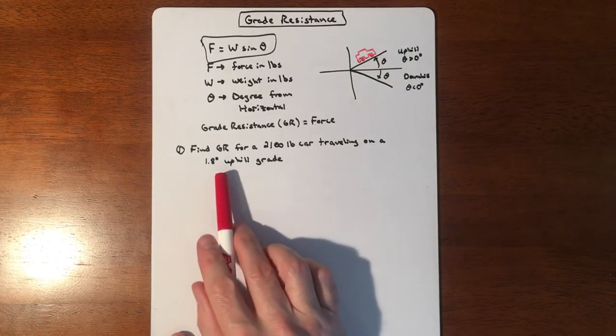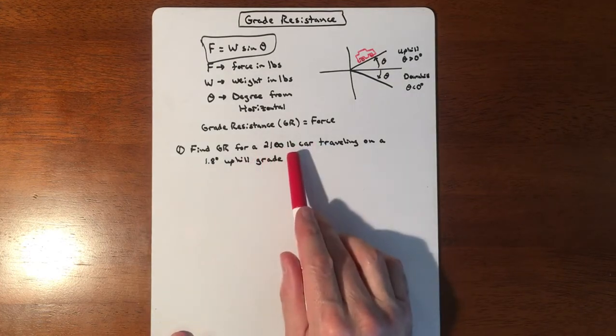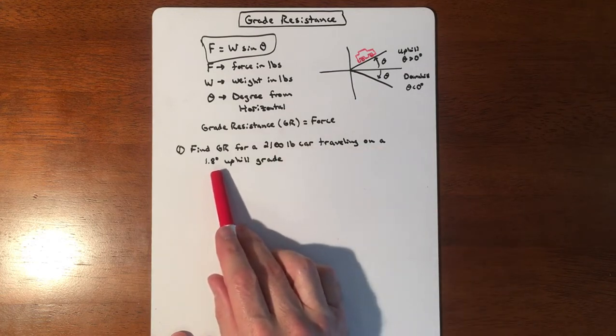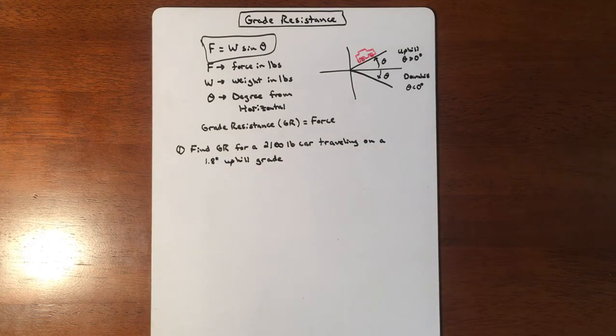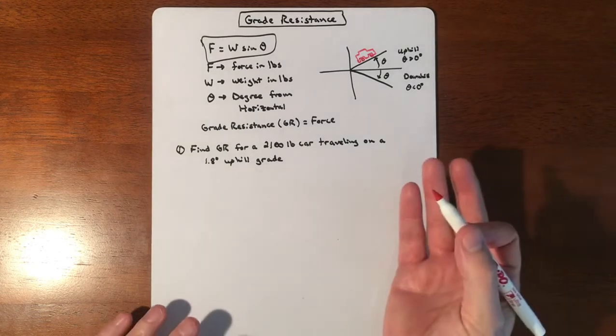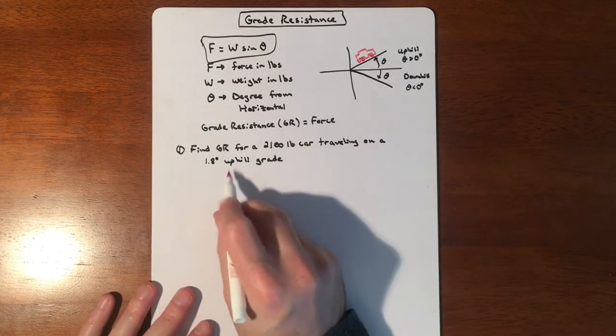If you were trying to find the grade resistance for a 2100-pound car traveling on a 1.8-degree uphill grade, then all we're doing is plugging in what we know and figuring out what we don't know.